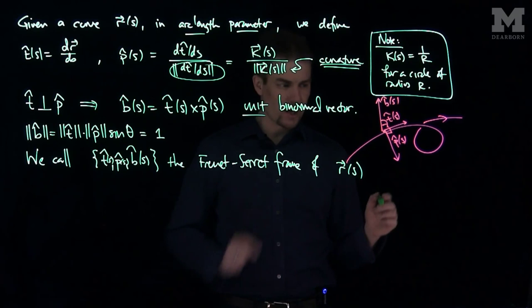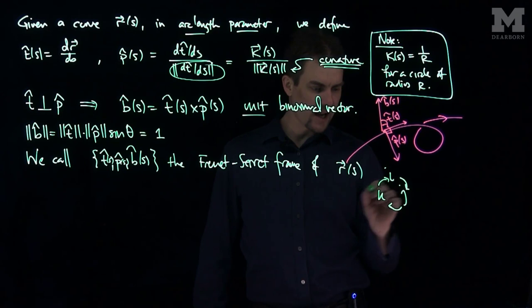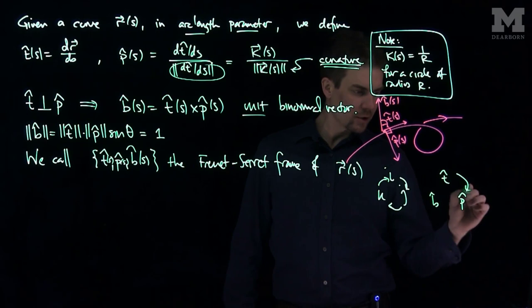And we can note that t, p, and b satisfy the same rules as i, j, and k. So we have the cross-product rules i, j, k. For example, i cross j is k, j cross k is i, k cross i is j. We have the same rules for t-hat, p-hat, and b-hat. The same structure holds.